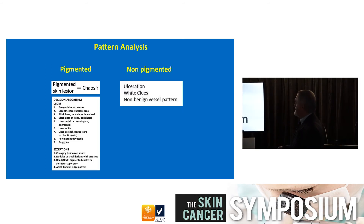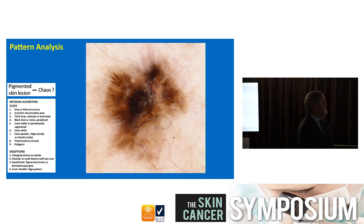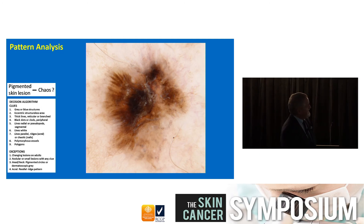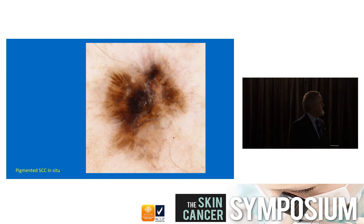We have two methods: one for pigmented lesions - chaos and clues - where if it's chaotic we look for one of nine clues. For non-pigmented lesions we look for ulceration, white clues, and non-benign vessel patterns. So we put a pigmented lesion through pattern analysis: it's chaotic, different on one side to the other, and it's got lines radial segmental - so we cut it out and the pathologist tells us what it is.